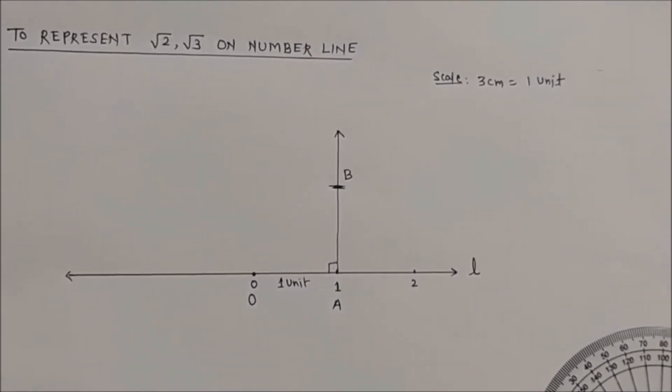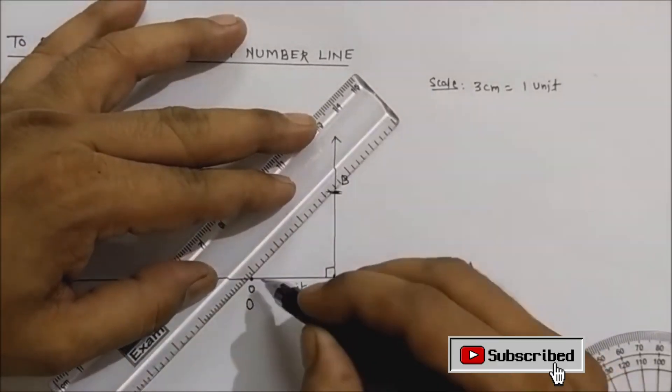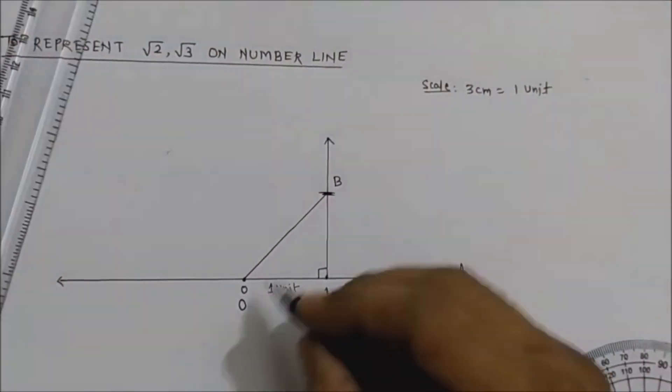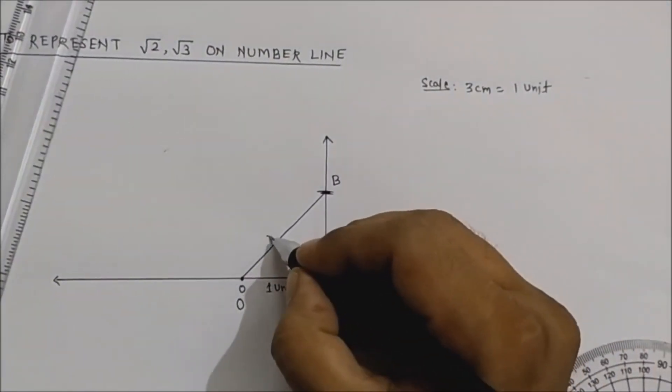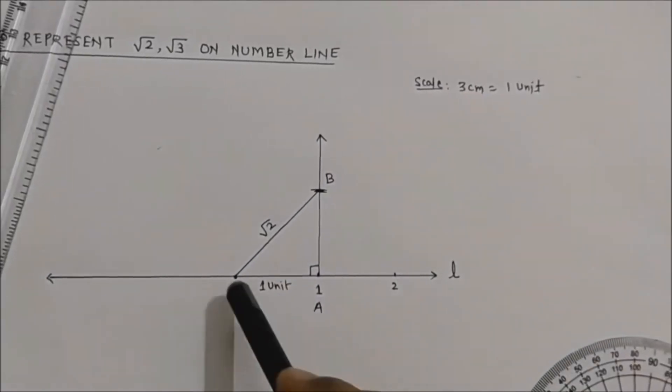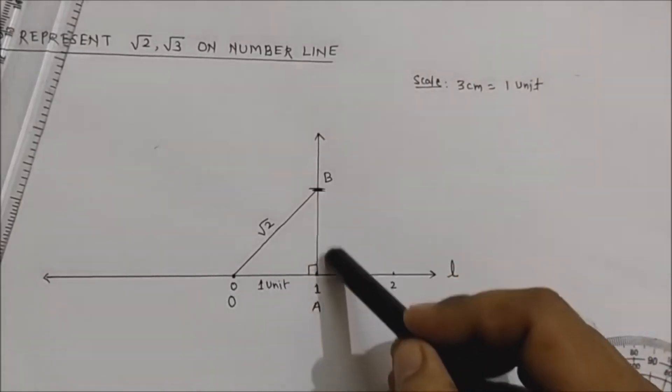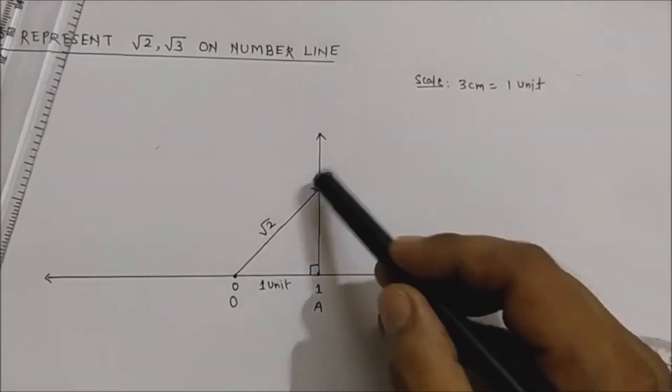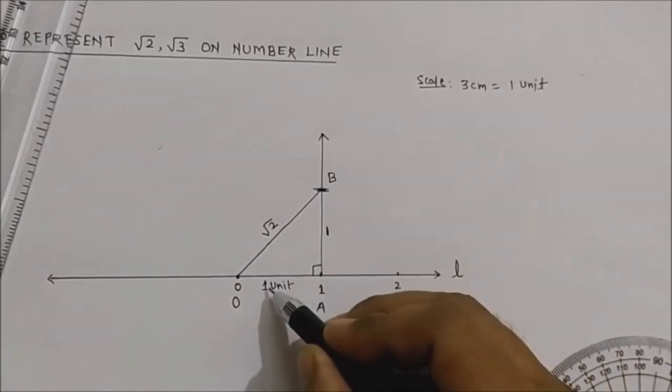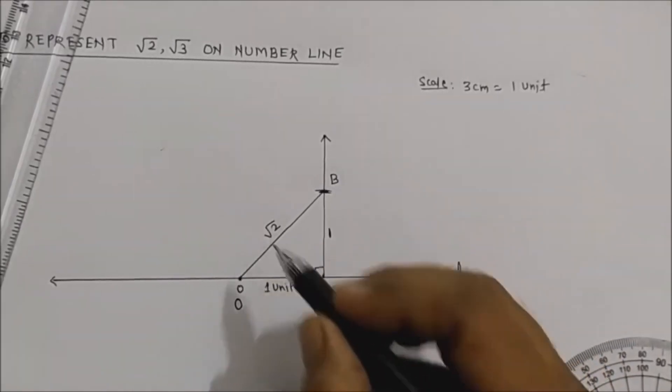After this, draw segment OB. This distance is root 2 because in triangle OAB, by Pythagorean theorem, OB square equals OA square plus AB square. So OB square is 1 square plus 1 square, that is 1 plus 1 equals 2, and this gives you root 2.